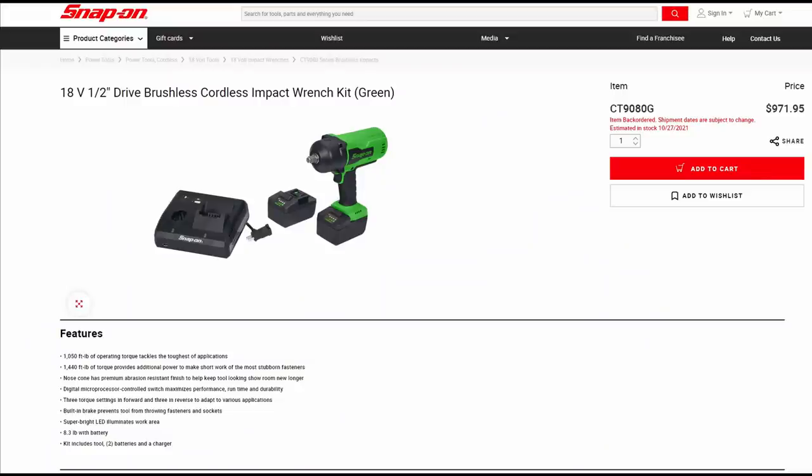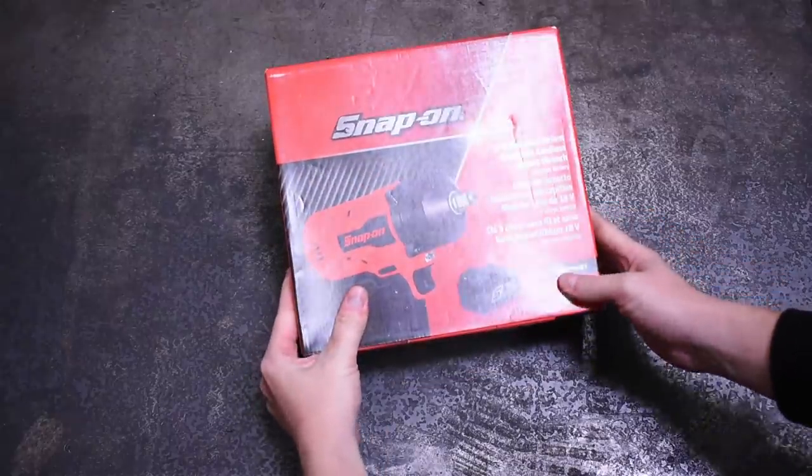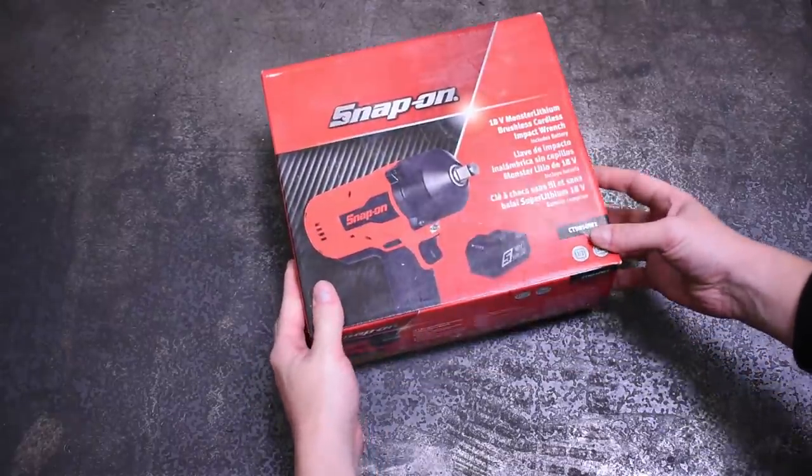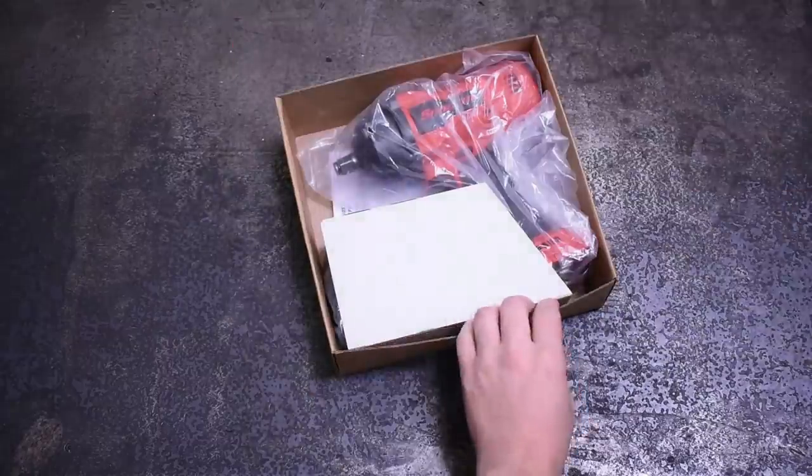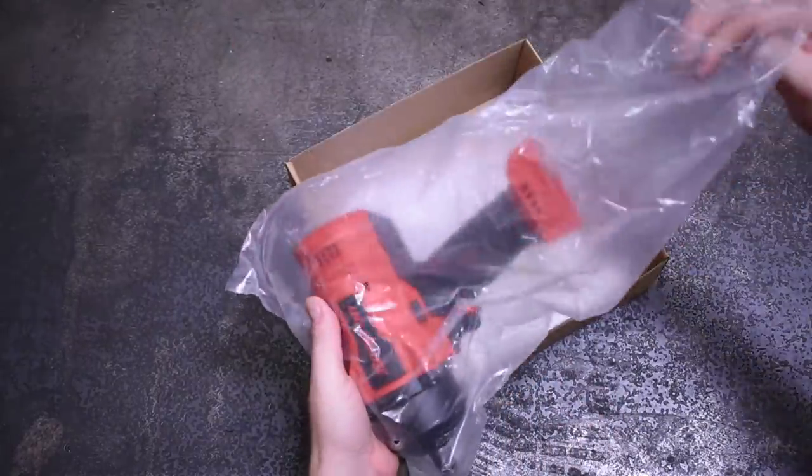Well, they must have anticipated that sort of belly aching from you guys because right on the heels of the CT9080, all new for 2022, we have the CT9050. Smaller, lighter, and cheaper than that big Chungus 9080, but also smaller and lighter than the Milwaukee high torque.